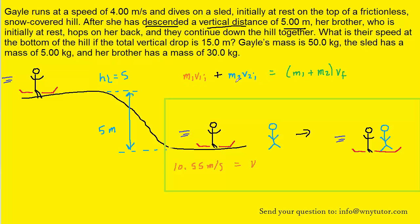Here's the initial momentum of Gale, the initial momentum of her brother, and then the final momentum of both Gale and her brother combined. The brother initially was at rest, so his initial speed is 0, therefore this term will cancel out. We'll divide both sides by M1 plus M2, and that's going to allow us to solve for the final speed of Gale, the sled, and her brother all combined.